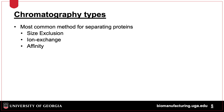There are different chromatography types which can be leveraged as a purification strategy. The most common strategies, which we will review in this lecture, include size exclusion, which separates proteins based on their size; ion exchange, which separates proteins based on their charge; and affinity, which separates proteins based on specific binding sites, either naturally occurring or added using recombinant DNA technology.